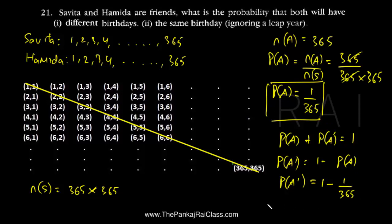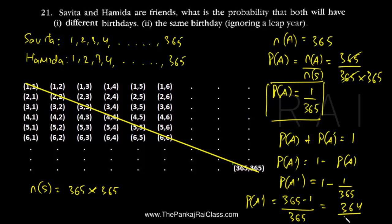That would be cross-multiplied, so that would be 365 minus 1 upon 365, which gives us 364 upon 365. So that is the probability of them having a birthday on different days. In this way the problem became very simple. Thank you very much.